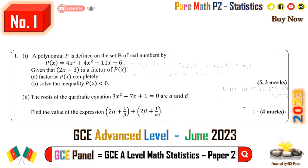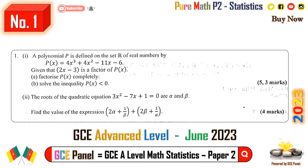Question two: the roots of the quadratic equation 3x squared minus 7x plus 1 equals 0 are alpha and beta. Find the value of the expression: (2 alpha plus 1) over beta plus (2 beta plus 1) over alpha.